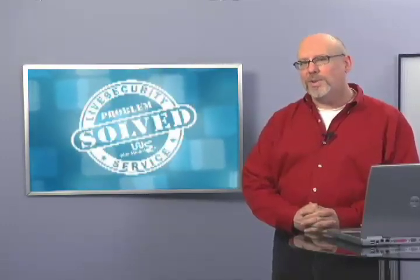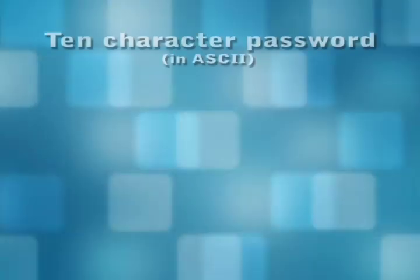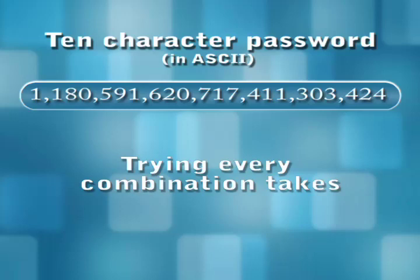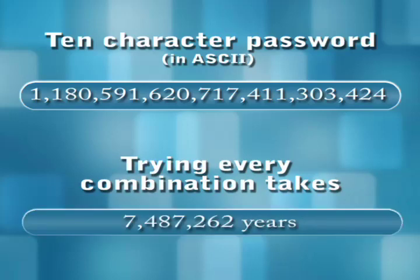A Pentium 4 machine can check almost five million per second. So, if a stock PC can calculate and try millions of possible passwords per second, why do I say brute force is slow? Because a password with only ten characters has more than one sextillion possible character combinations. Even burning through combinations at a rate of five million per second, it would take around seven and a half million years for a Pentium 4 computer to try all possible combinations.